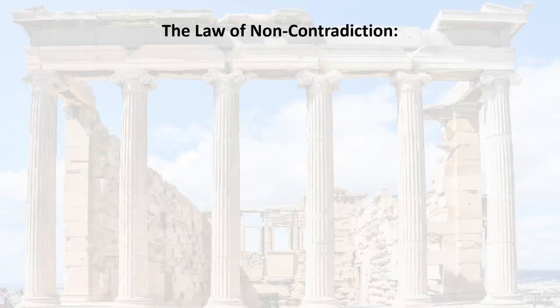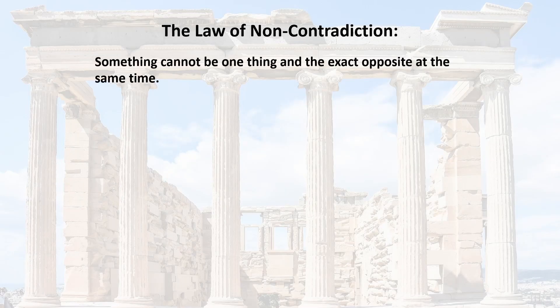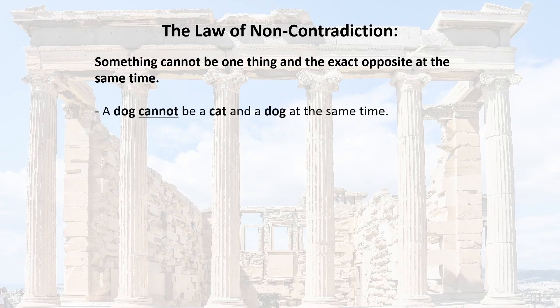Next we have the law of non-contradiction, which is actually very simple. Something cannot be one thing and the exact opposite at the same time. A dog cannot be a cat and a dog at the same time. I can't exist and not exist at the same time.